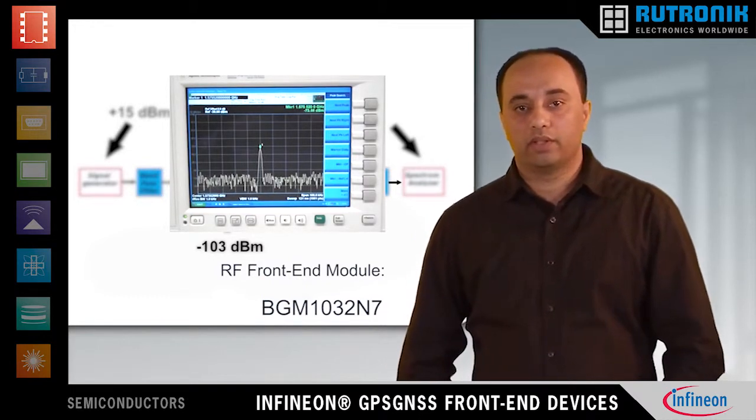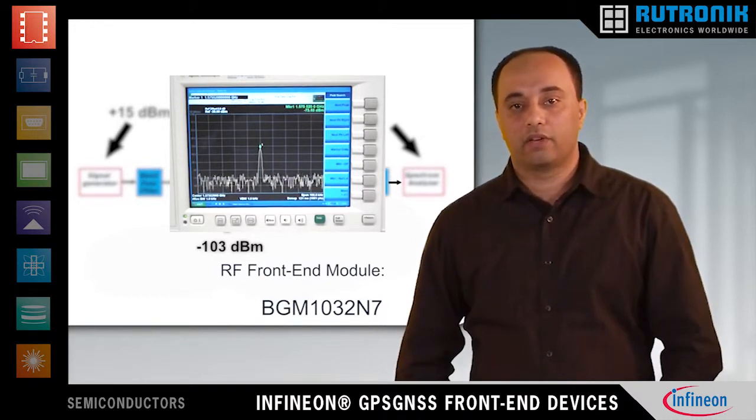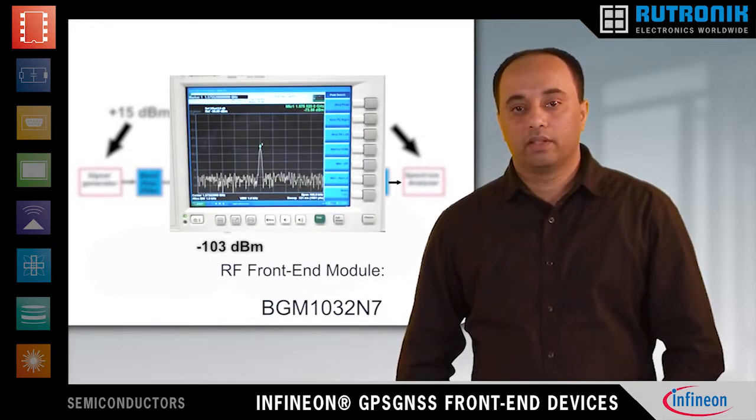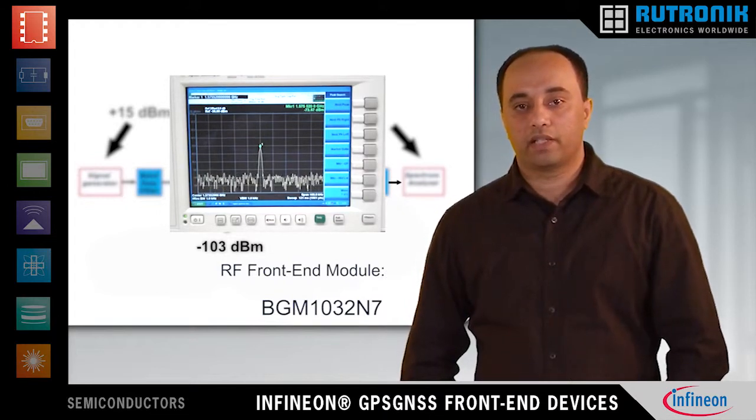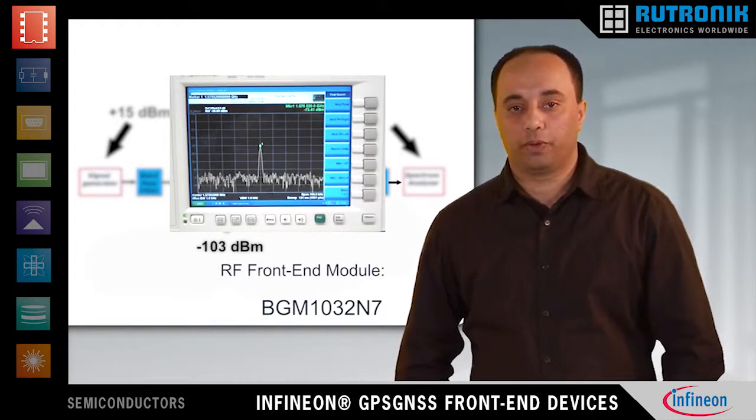With this module, the jammer signals are rejected, thus tracking errors are minimized for GPS in mobile phones.